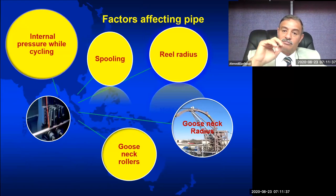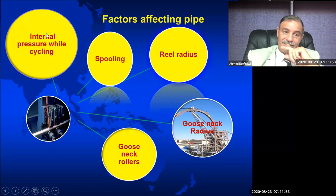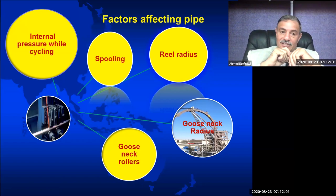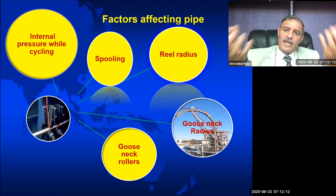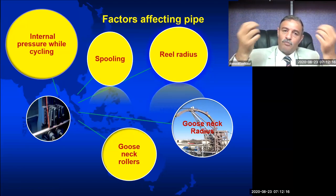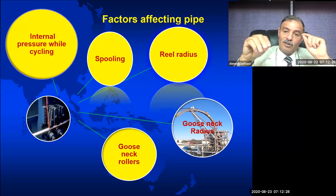If we discuss the main factors affecting pipe life, you will notice the big circle on this screen with internal pressure while cycling inside it. This is what kills pipe life dramatically. When you run in the hole using coil tubing, coil tubing is actually a medium — normally you need to pump something down, so you insert this pipe, run it to the desired depth, and then start pumping through it the fluid you need to inject in that particular area.